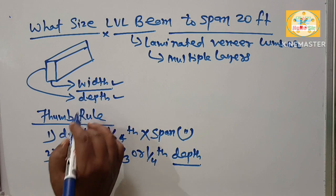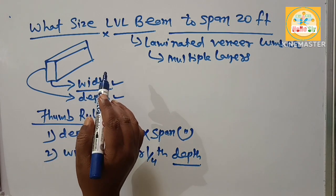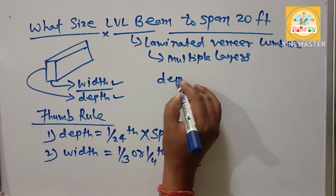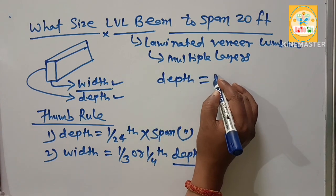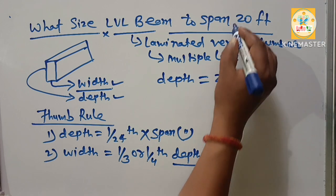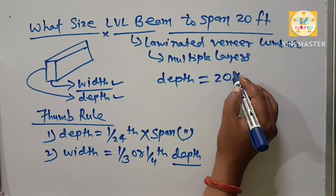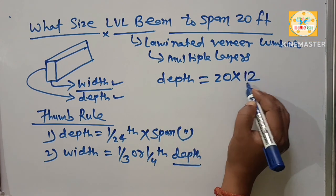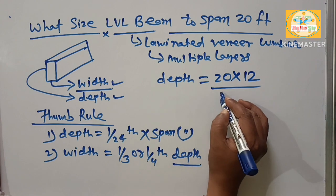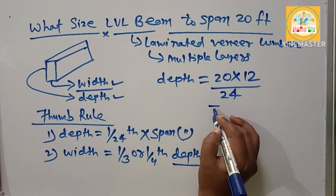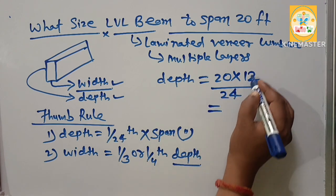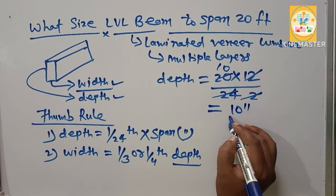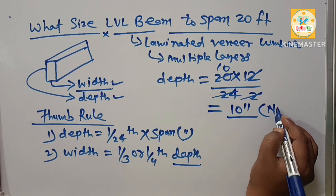First, you have to find out what are the depth of LVL beam needed to span 20 feet. So depth is equal to 1/24th, their span is 20 feet. Multiply by 12 inches, divided by 24. This will come about 10 inches. This one is nominal size.